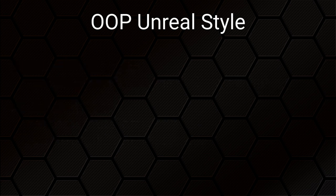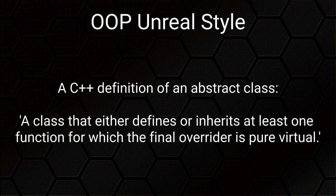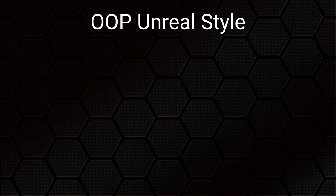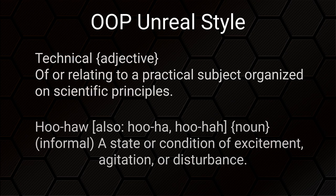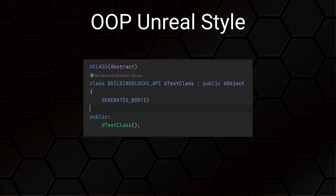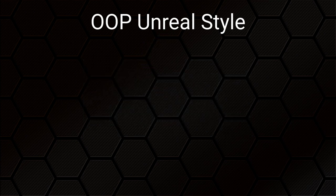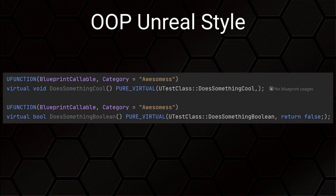Now, if you're used to coding with C++, you might not be 100% comfortable about how Unreal does things. Technically speaking, in C++ terms, an abstract class is a class that either defines or inherits at least one function for which the final overrider is pure virtual. And that's not what Unreal UClass abstract classes are. Because Unreal is basically doing its own managed framework type thing on top of C++, and because of the way CDO works, classes which you might not think do, actually do need to be instantiable, because Unreal needs to instantiate them so it can do reflection and other stuff on them. We could get into a lot of technical detail over this, and ultimately it doesn't really get us much.